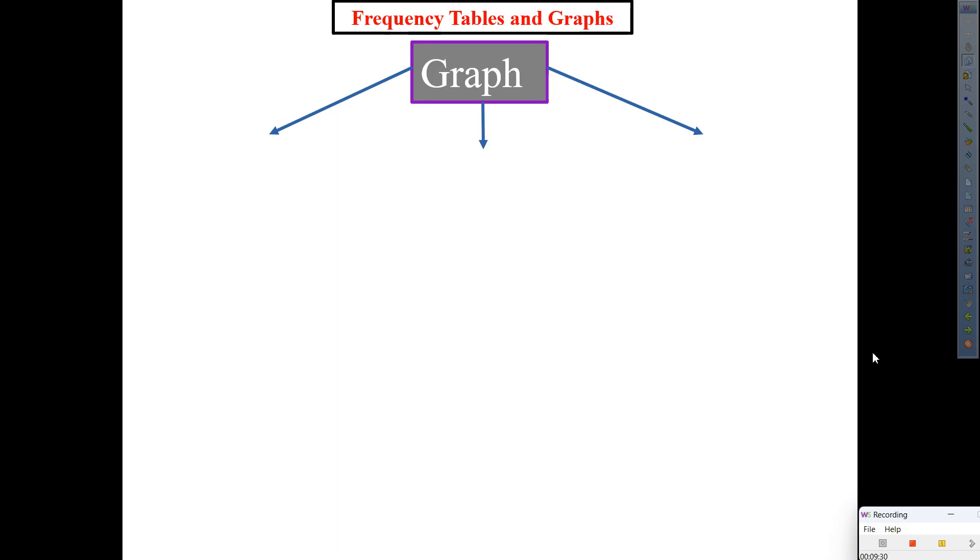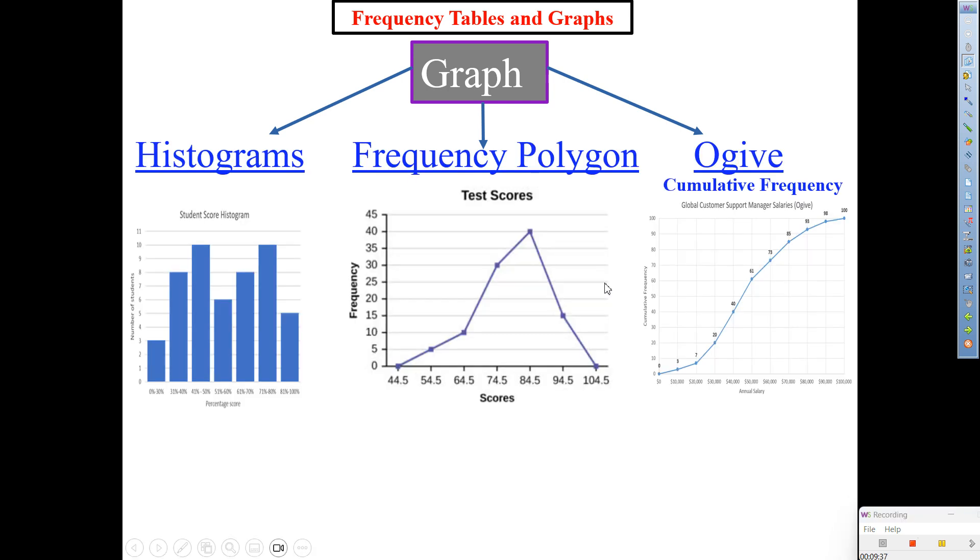Five. Three. One Mississippi. Bam. Histogram, frequency, polygon, and O-Jive. Yes? All right.